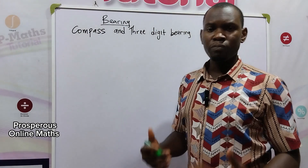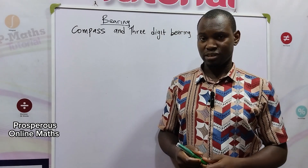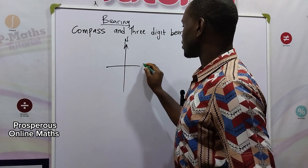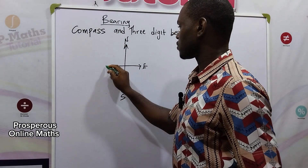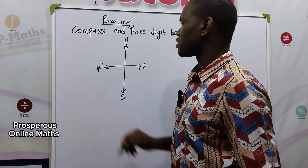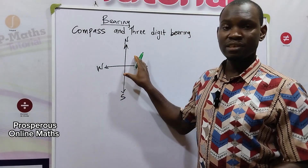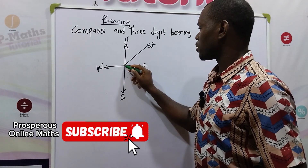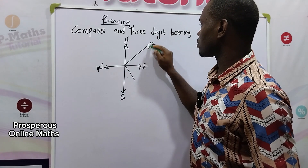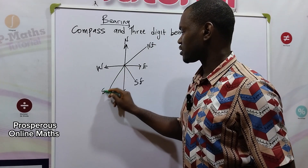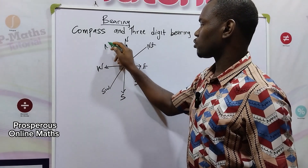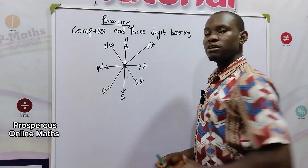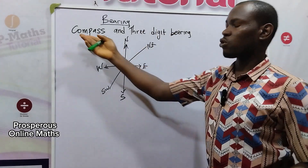So what is compass bearing? Compass bearings are bearings that are based on the cardinal points. The cardinal points are the north, the east, the south, and the west. When angles are measured using the cardinal points, we call it compass bearing. We also have the north east, the south east, the south west, and the north west. So when we measure angles or degrees using the compass, we consider it as a compass bearing.